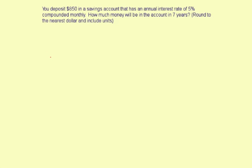You deposit $850 in a savings account that has an annual interest rate of 5% compounded monthly. How much money will be in the account in 7 years? Round to the nearest dollar and include units. The units, of course, will be dollars.